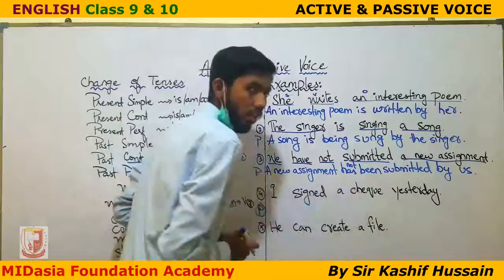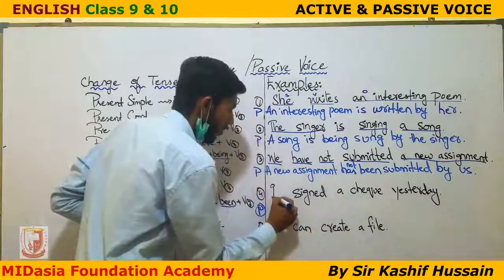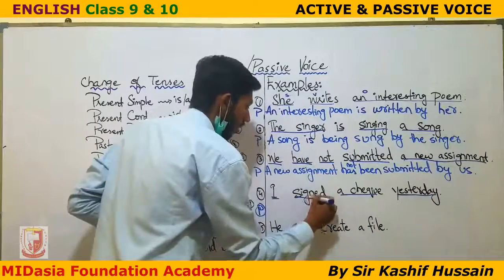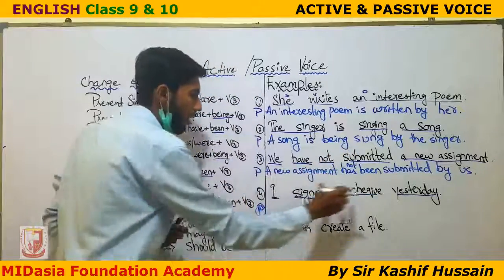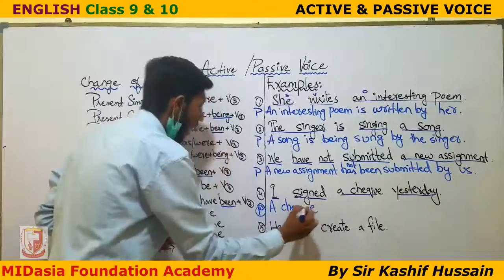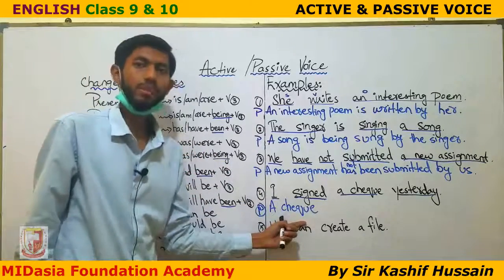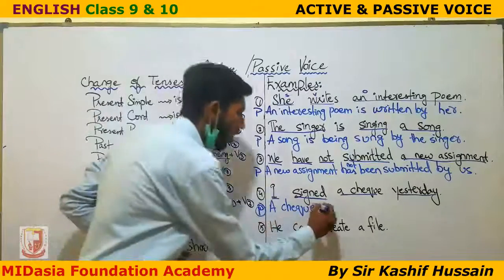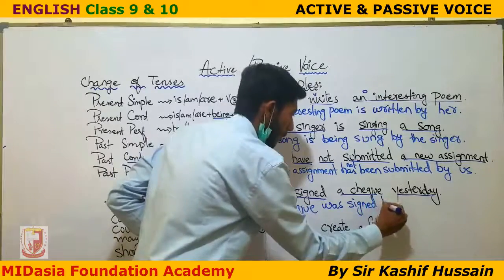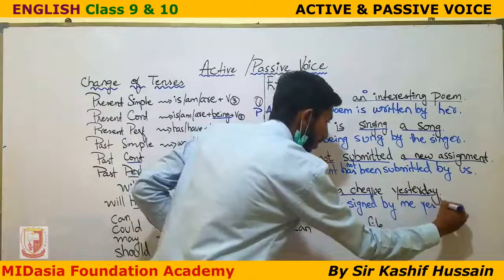Example 4: 'I signed a check yesterday.' This is past simple tense. Label it — 'I' is the subject, 'signed' is the verb, 'a check' is the object, and 'yesterday' is an adverb — an extra word. First, take the object: 'a check.' For past simple, we use 'was' since 'check' is a singular noun. The passive form is: 'A check was signed by me yesterday.' We change 'I' to 'me.'